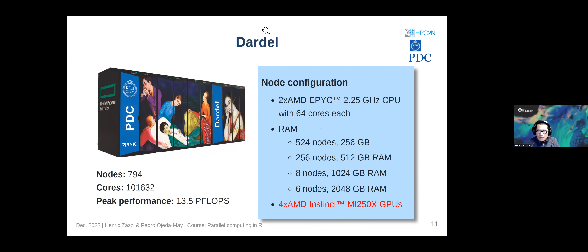Dardel contains around 800 nodes and can achieve 13.5 petaflops. The node configuration uses AMD EPYC processors with up to 64 cores per CPU — compared to Kebnekaise which has up to 28 cores per CPU. They also use AMD GPUs.